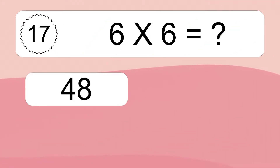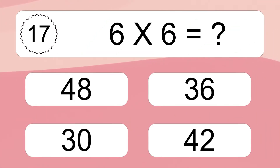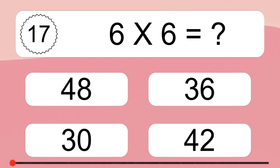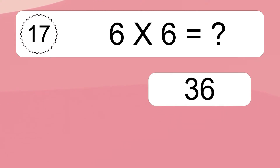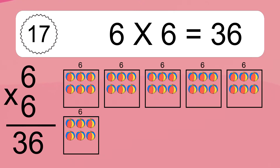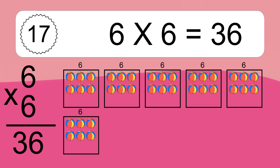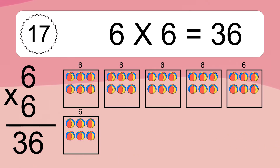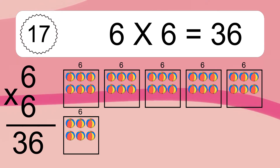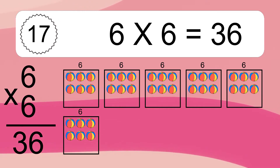Six times six equals what? Six times six equals 36. We have six boxes and each box has six colorful balls inside. If you count all the balls in all the boxes together, you will have six times six balls. This equals 36 balls.